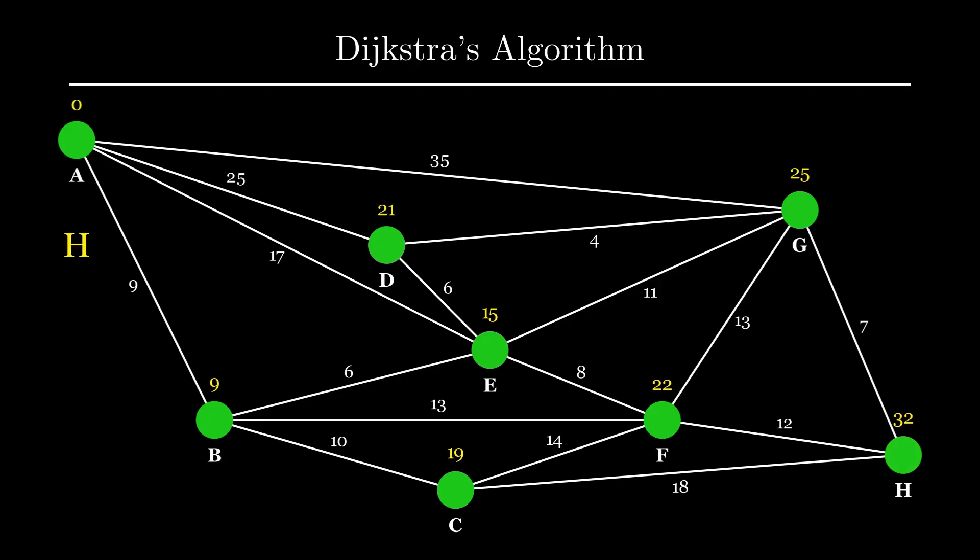We keep going until we get to H, and this time the distance is 32. Going backwards we find the path is A → B → E → D → G → H. We now have a successful algorithm. The proof works similarly: we go in increasing order — starting at zero, then nine as the first value, and so on — and because we're only adding positive values, distances to the next node must always be higher. We can guarantee we pass all nodes in increasing order of distance until we reach H.